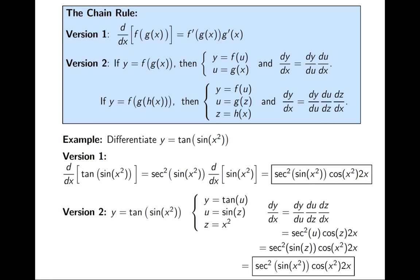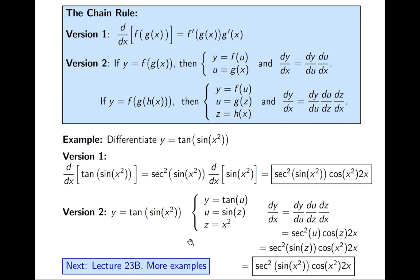So you should get lots of practice. For each problem you work, try version one and then try version two. I kind of like version one because it tends to be a lot less writing, and I think most problems you'll ultimately be using version one. However, there are times when version two is actually more convenient, so it's good to be fluent in both. That's it for today — we're not quite done with the chain rule, so next time is lecture 23b with more examples. Have a great week, and I'll see you next time. Goodbye.